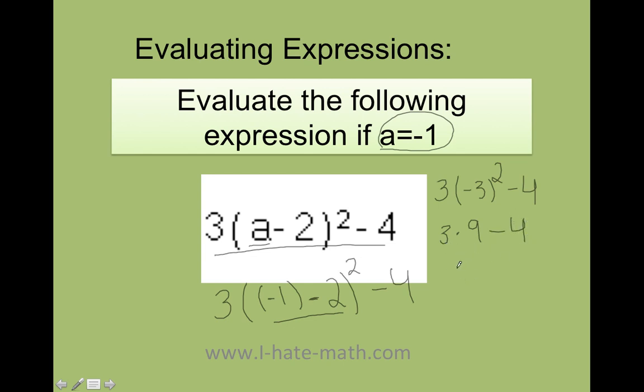Finally, 9 times 3 equals 27. And 27 minus 4 is going to equal, let's see, 23. And that is my answer.